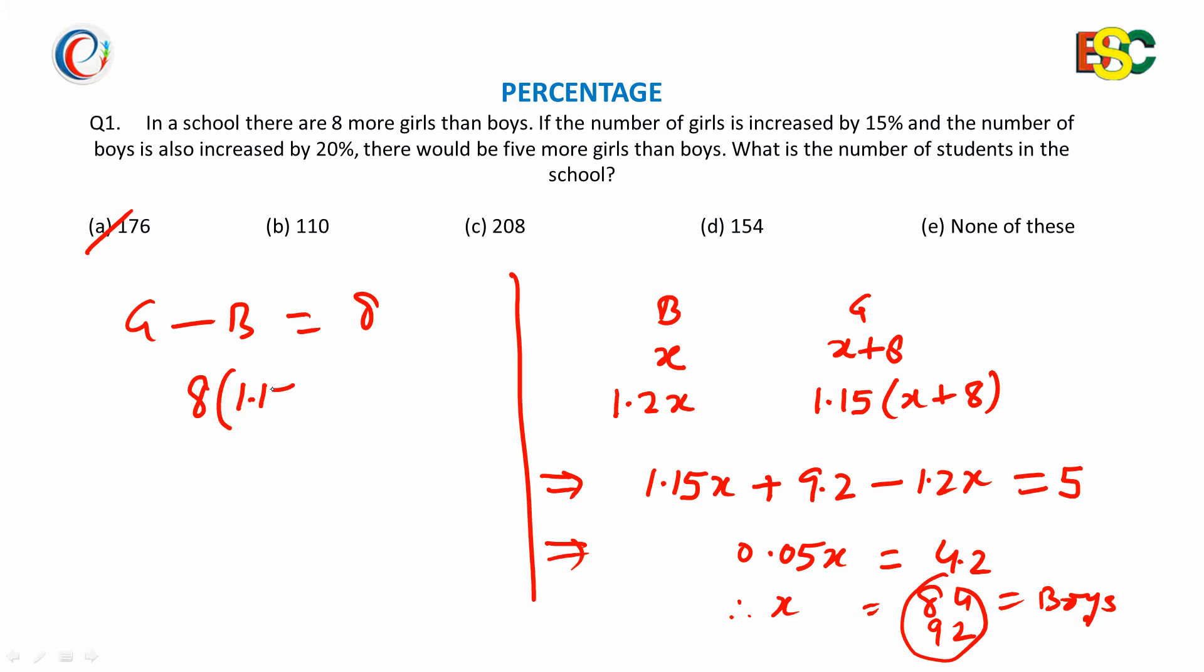If we are doing 15% for both, then we have 9.2 difference. This means that 5% increase of boys, that is why this difference is 9.2 minus 5. This means 5% of boys is the difference.